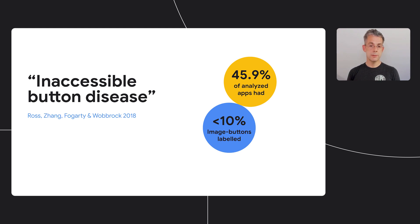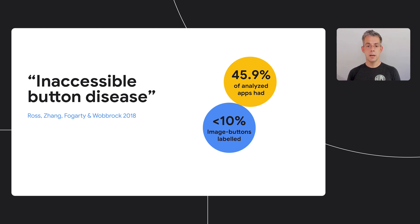Well, this would have two benefits. Firstly, where an app developer hasn't given an icon a label, Voice Access could add one. But also, it would mean that users could refer to the same icon with the same name consistently across apps. A classic three-dot overflow icon might be labeled 'menu' by some apps, 'overflow' or 'options' by others. We shouldn't expect users to learn different names for the same icon in different apps.